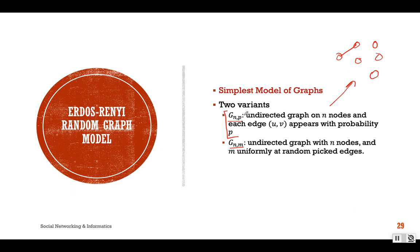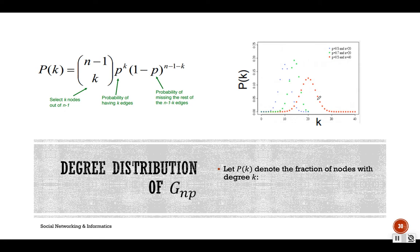This is a very simple model of graph. As we saw in our earlier segment, we examined network properties in a real-world network. To understand and compare those properties, we need a reference model. The Erdős–Rényi random graph model is the simplest model of graph, and we use it as a reference model to compare results from real-world networks.